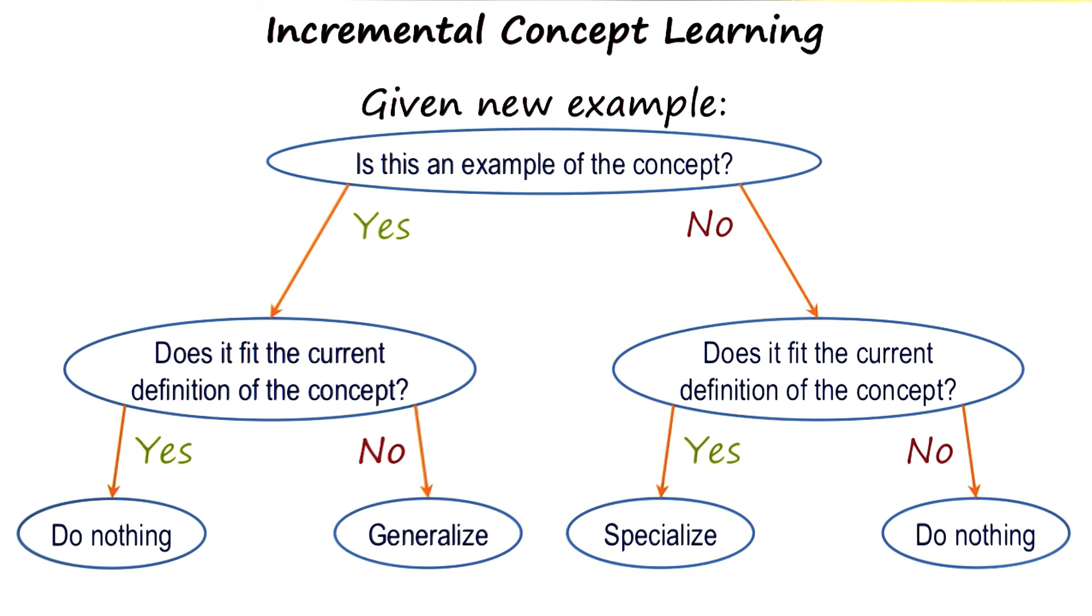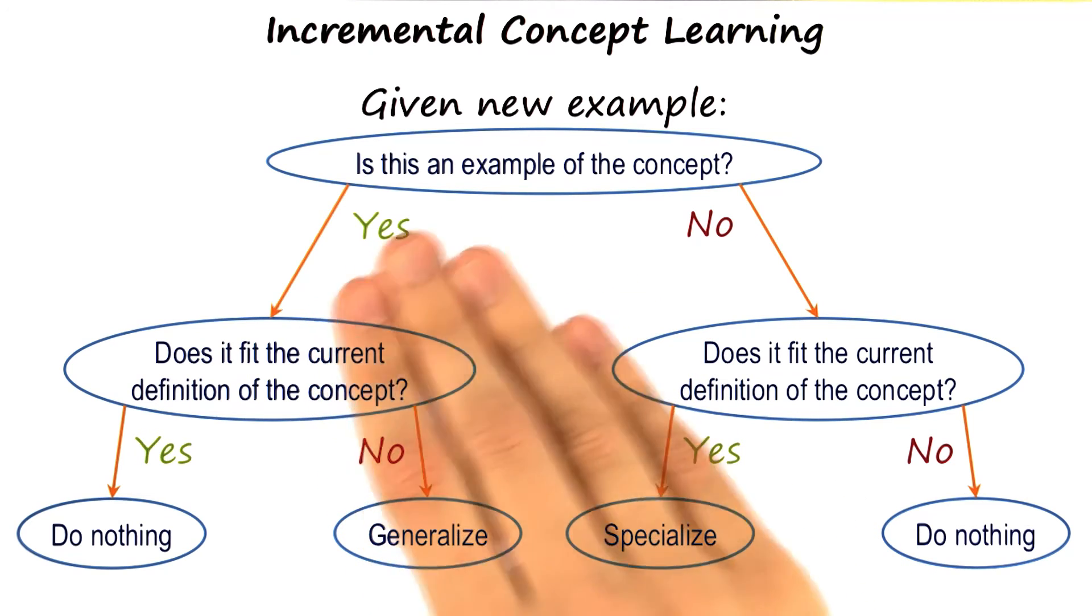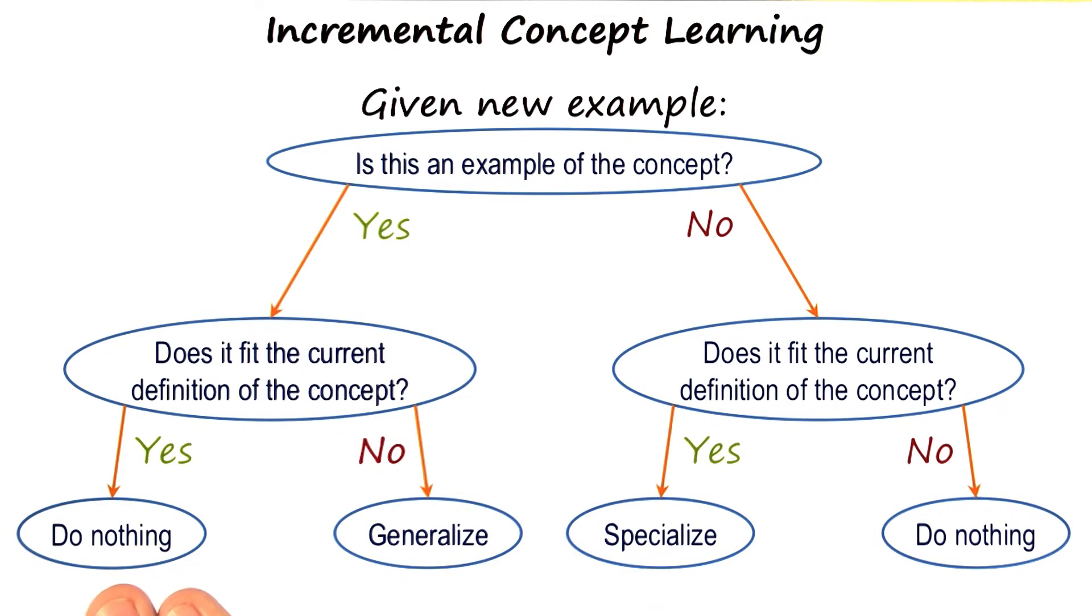Then she goes over to her friend's house, and is introduced to her friend's cat. And her friend's cat is orange. Right now, she's told that this is an example of a cat, but it does not fit her current definition of a cat. So she needs to generalize her definition that cats can be different colors.